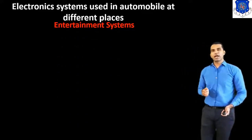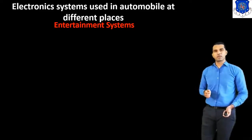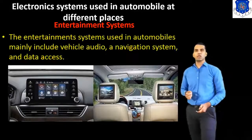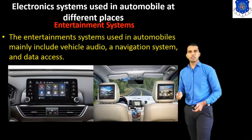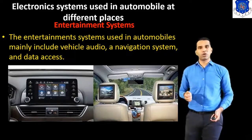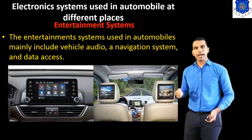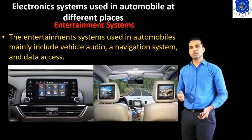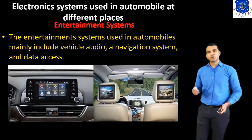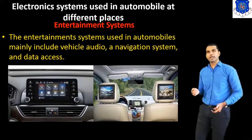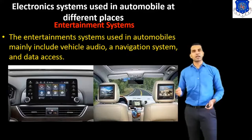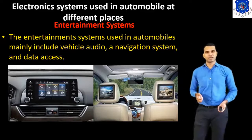The last one is the entertainment system. The entertainment system used in the automobile mainly includes the vehicle audio system, navigation system, and data access. These are the electronic systems used in the automobile at different places.